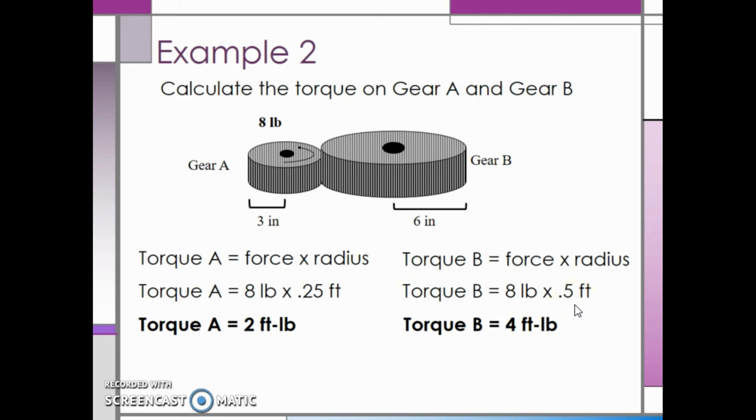These two examples prove that the larger the radius, the more torque you will have. In other words, the larger gear creates more torque, and it is proportional to the radius of the gear. In the next video, we will look at how speed is transferred between gears.